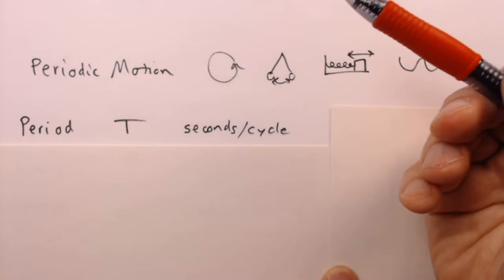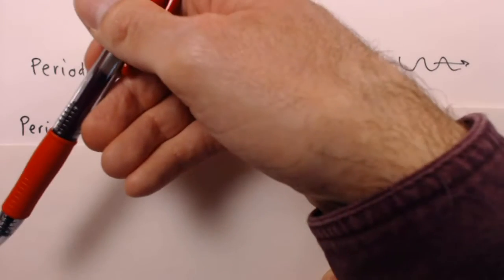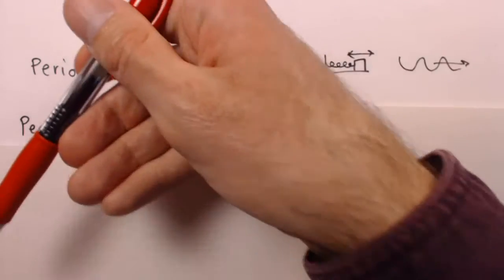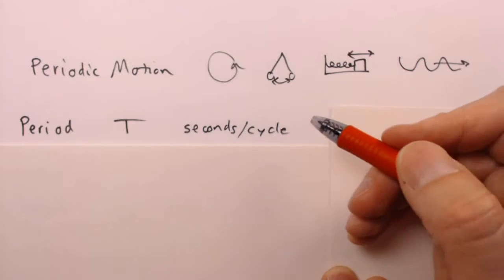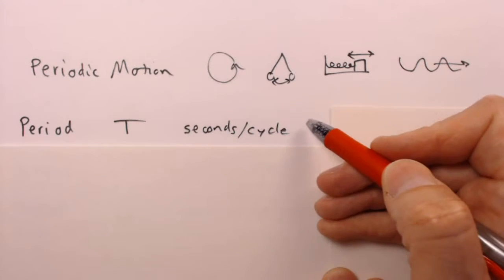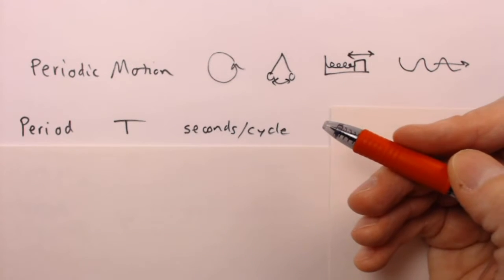Once around the circle, that's a cycle. For the pendulum, one motion from the far left to the far right and back again, that's also a cycle, and so on for the rest of them. So the amount of seconds it takes to complete one of those cycles, that is the time period.